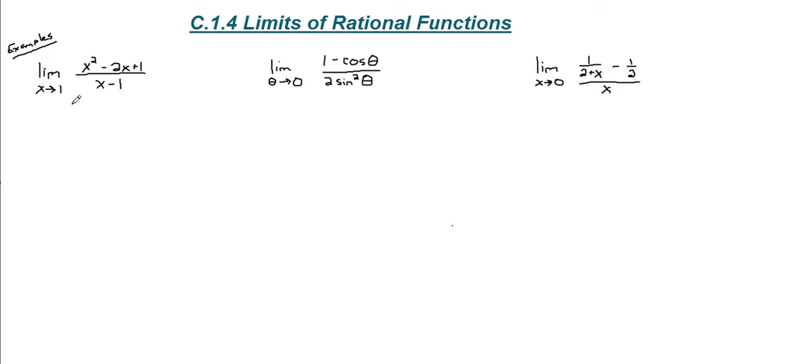And our first one, limit as x approaches 1. We see that if we plug in 1 for x, we get 0 in the denominator. So we're going to try to simplify it first, factor it out.